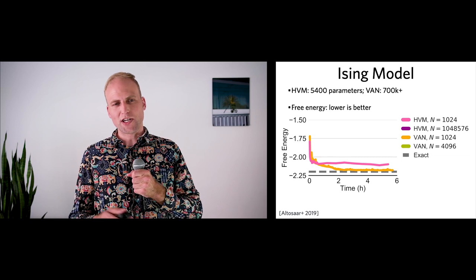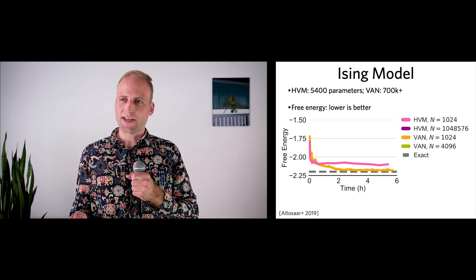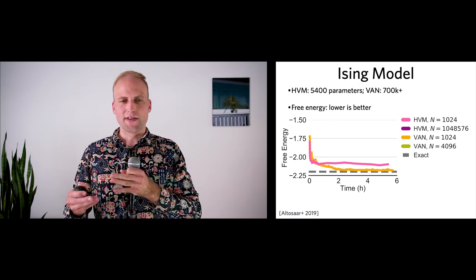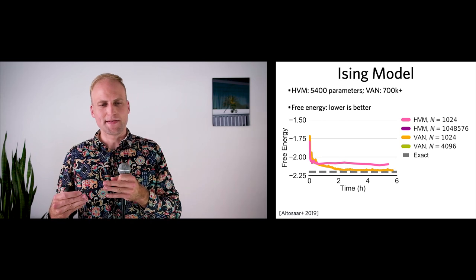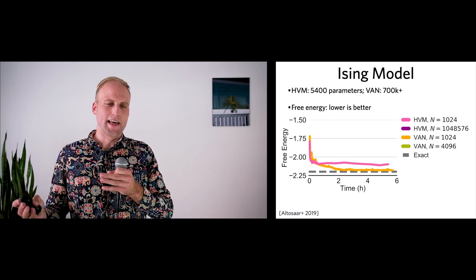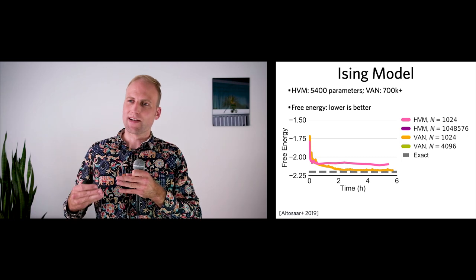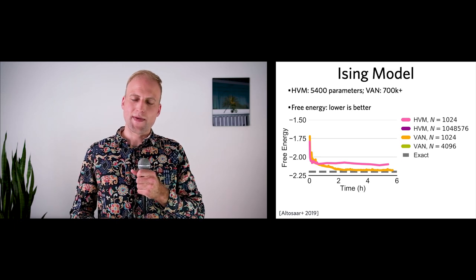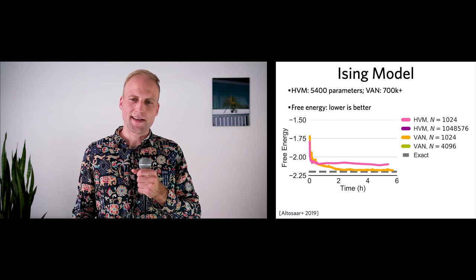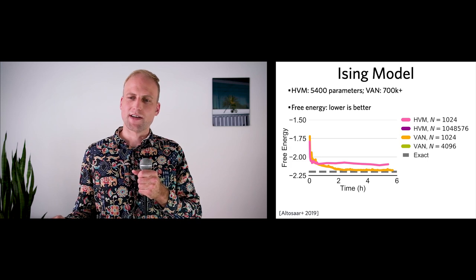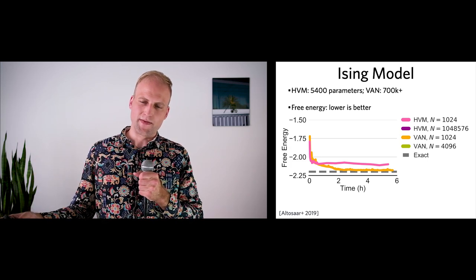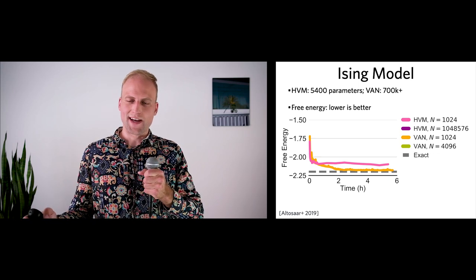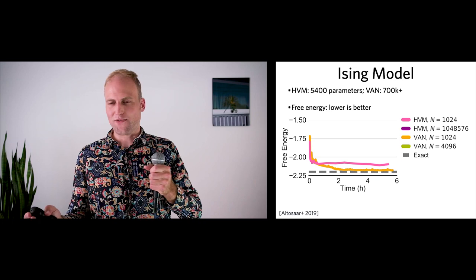How well does this work for approximating an Ising model? The benchmark is the free energy — inversely proportional to the variational lower bound, so lower is better. The free energy is one physical quantity we might compare to experimental values. For an Ising model with about a thousand random variables, the variational autoregressive network approach from the Physical Review Letters paper works better than a hierarchical variational model. So are we done?